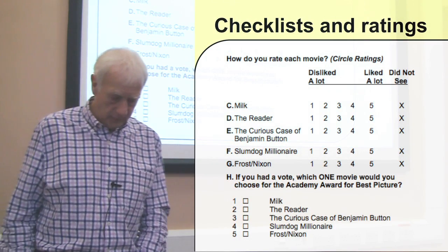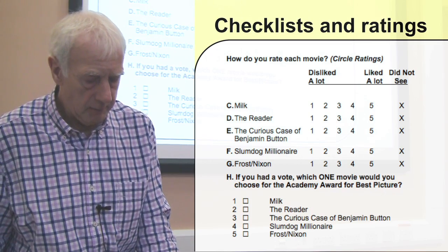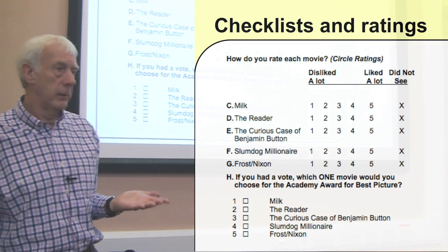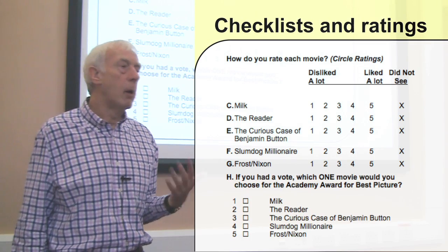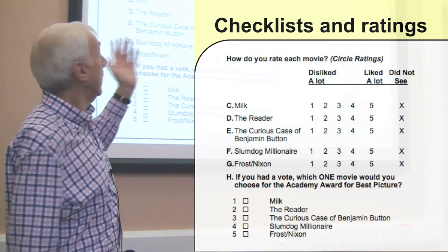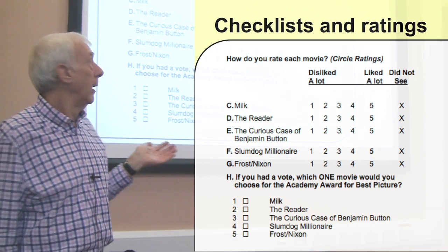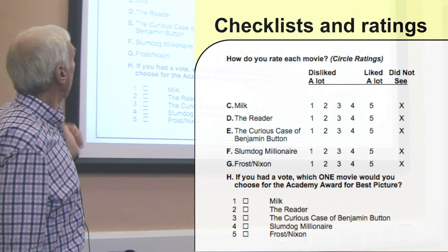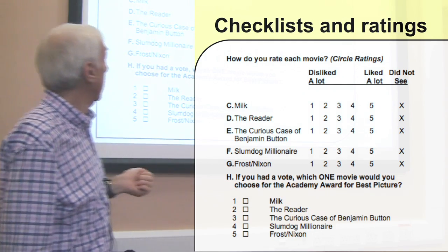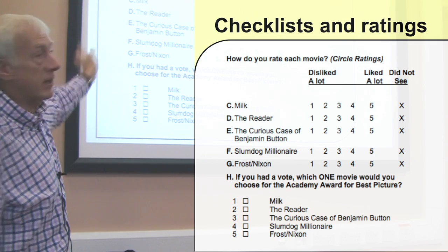When you're doing things like measuring attitudes and motives and things of this kind, you'll have scales. There are various ways of doing this, and checklists and ratings is the first way of doing things. Here's an example I took off the web — an example of a questionnaire, not a wonderfully designed one, but just this one question about rating movies.